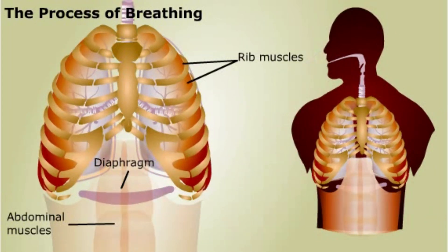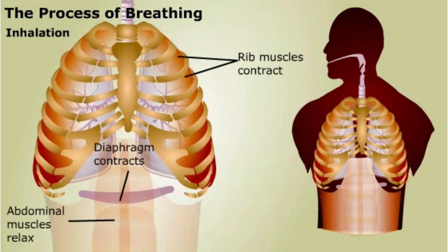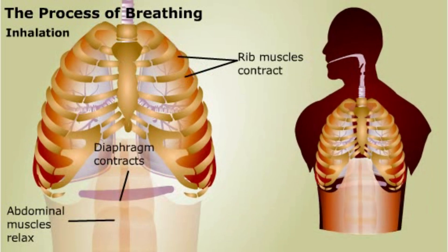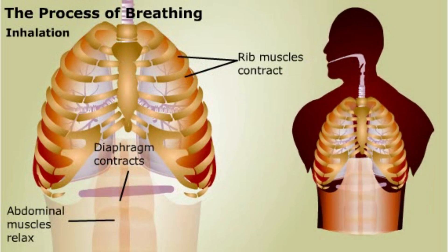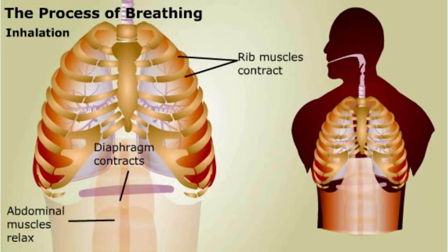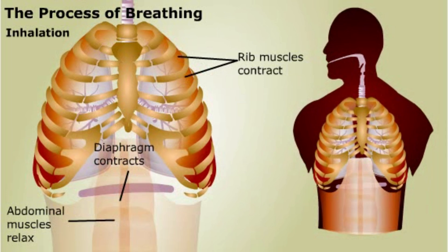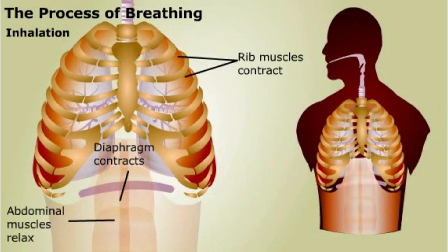During inhalation, the rib muscles and diaphragm contract, while the abdominal muscles relax, lifting up and expanding the ribcage and lowering the diaphragm. The pressure in the lungs decreases, and air rushes in to equalize the pressure.